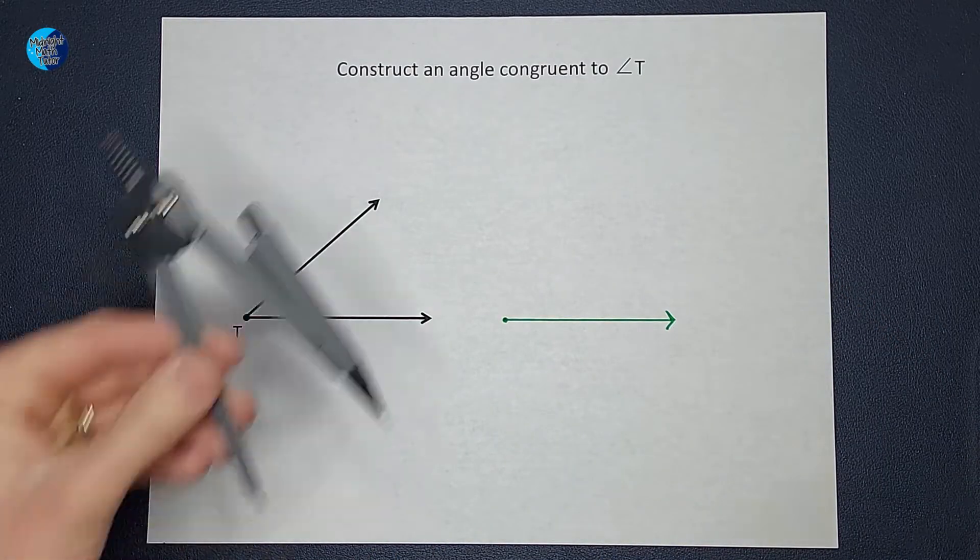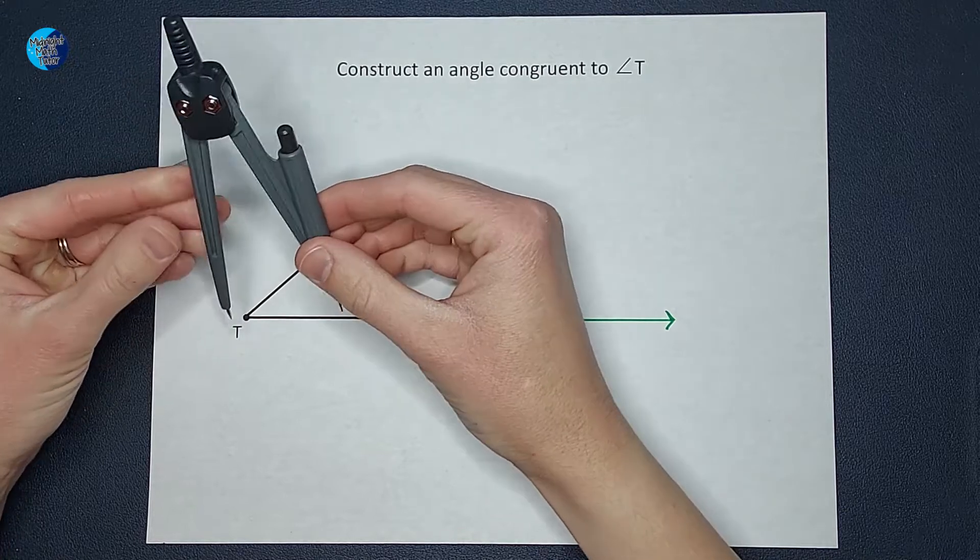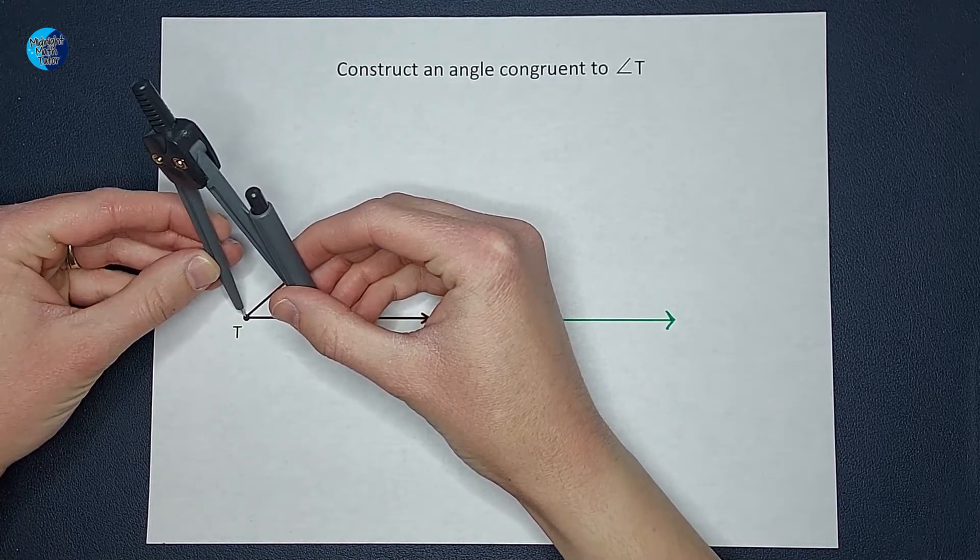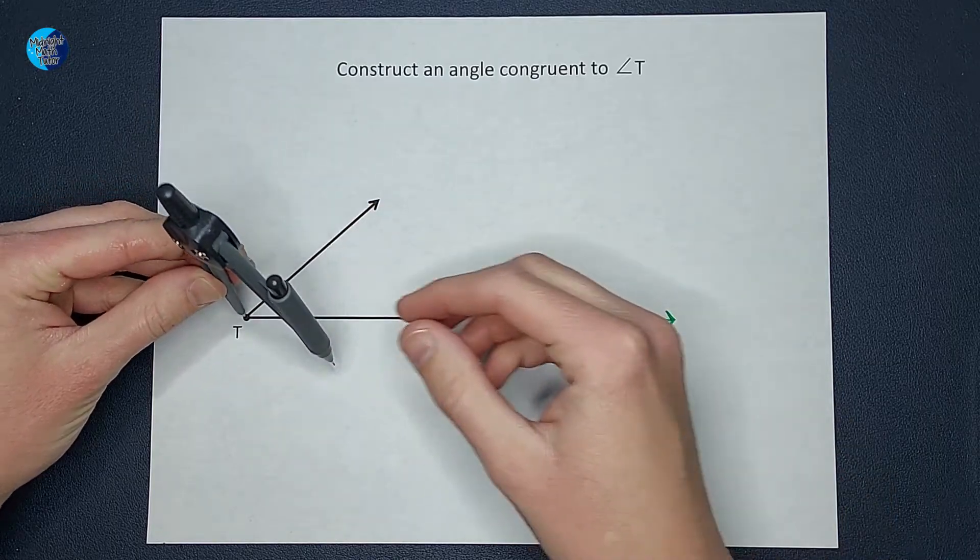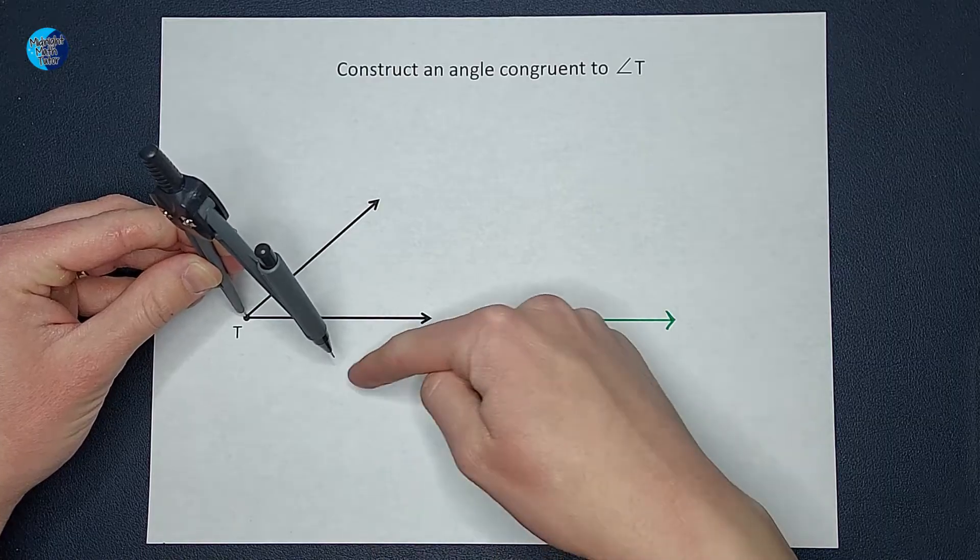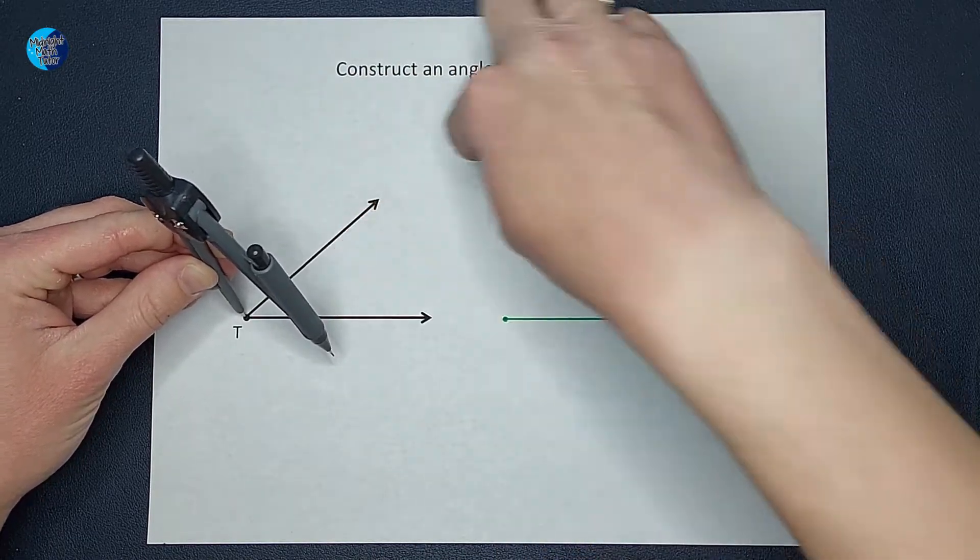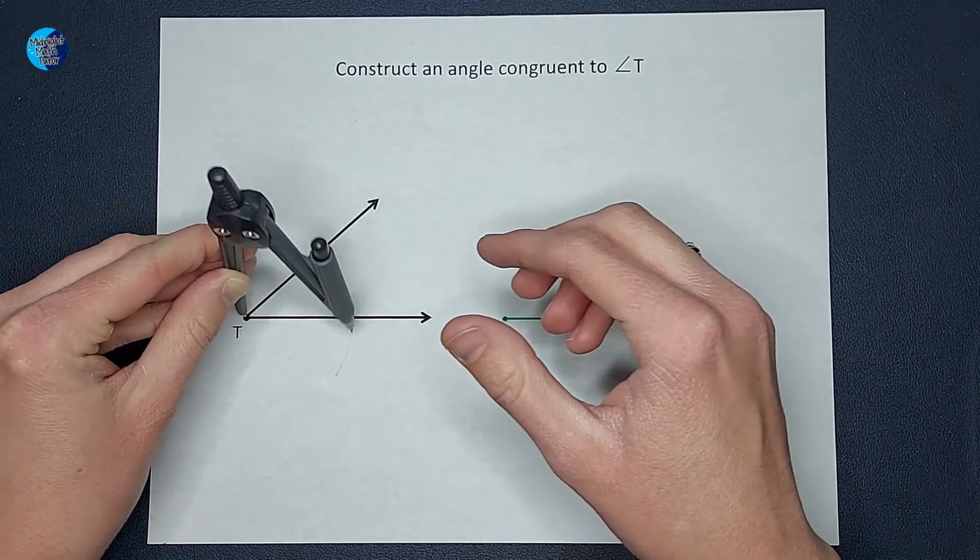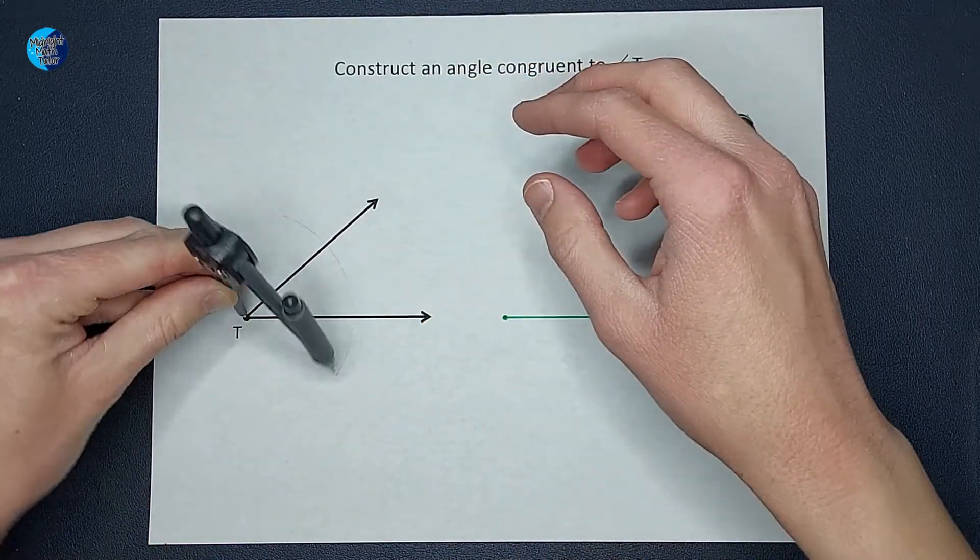Now the next thing I'm going to do is get my compass and I am going to set the needle on my point T here and I'm going to make an arc. It doesn't really matter how far spaced I am as long as I am within these arrows. I don't want it clear out here. So I'm going to draw a big arc. There we go.